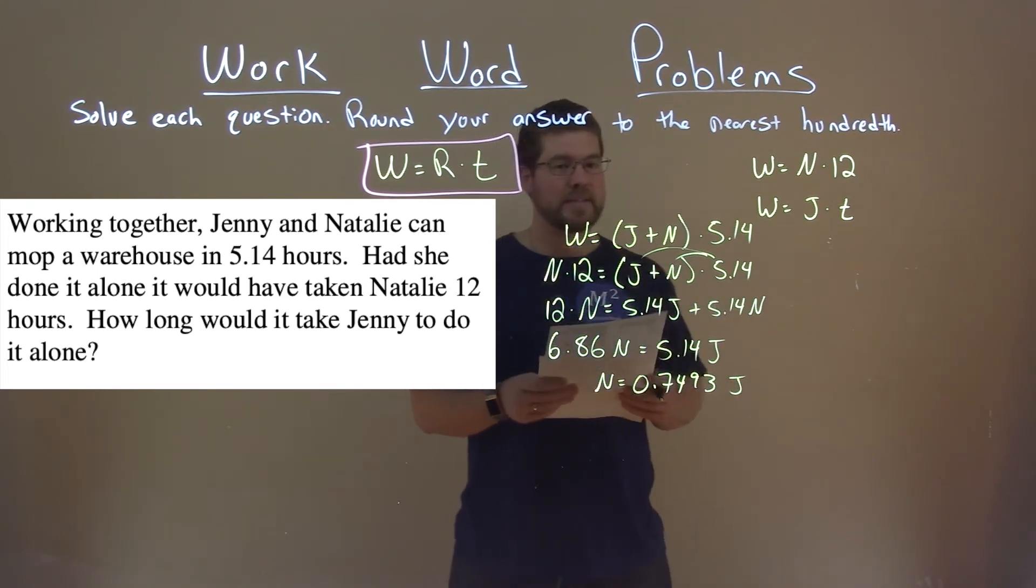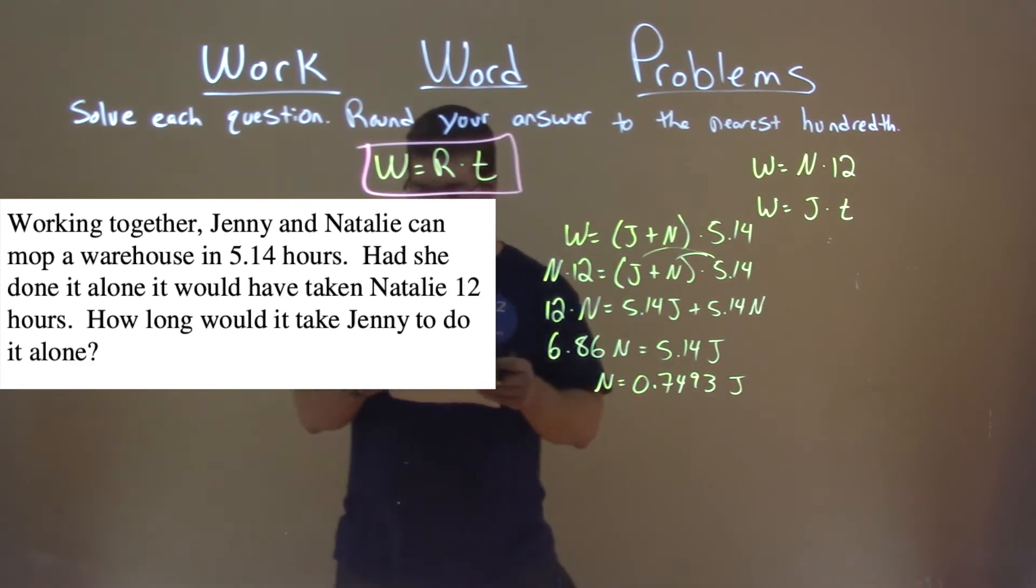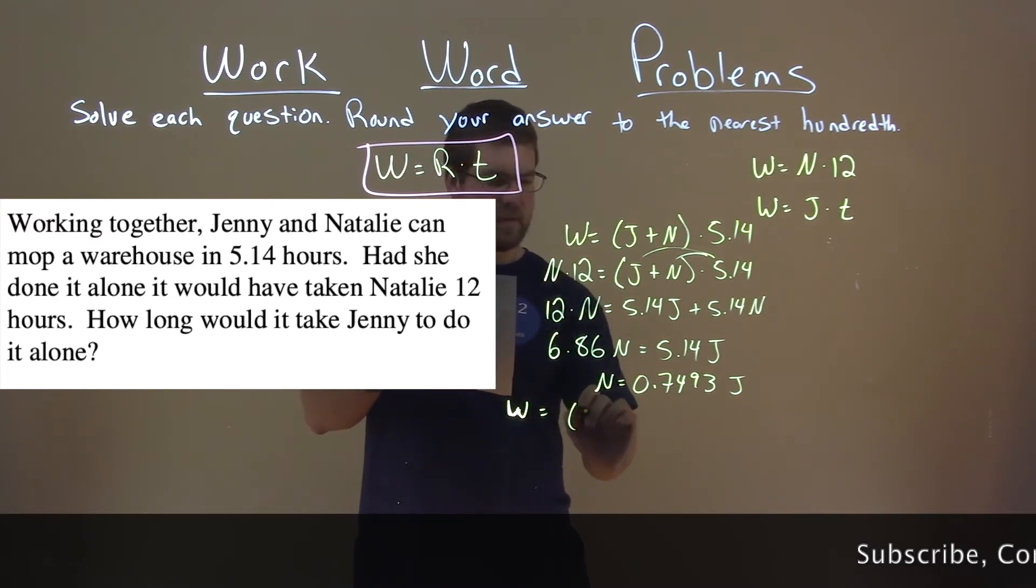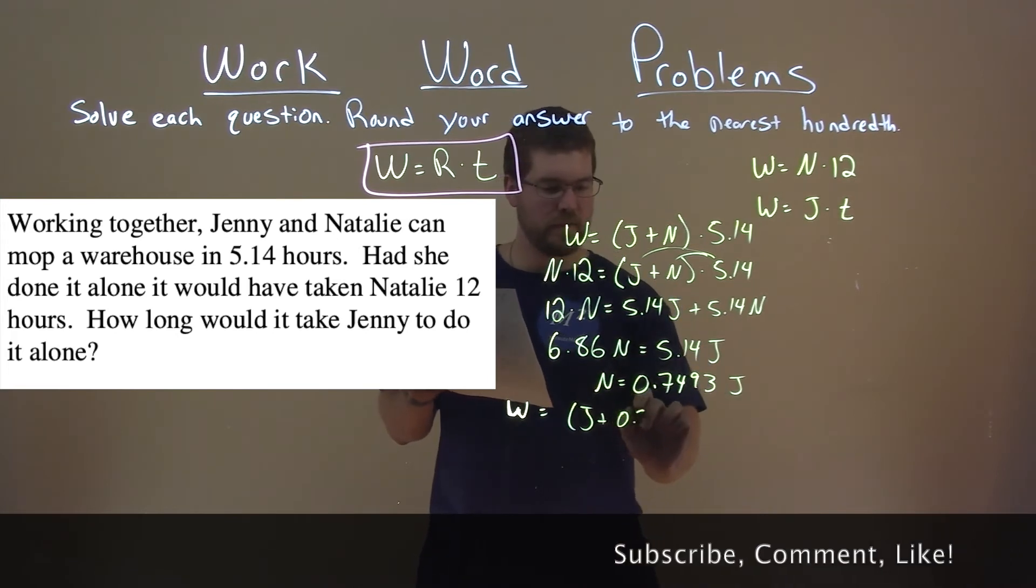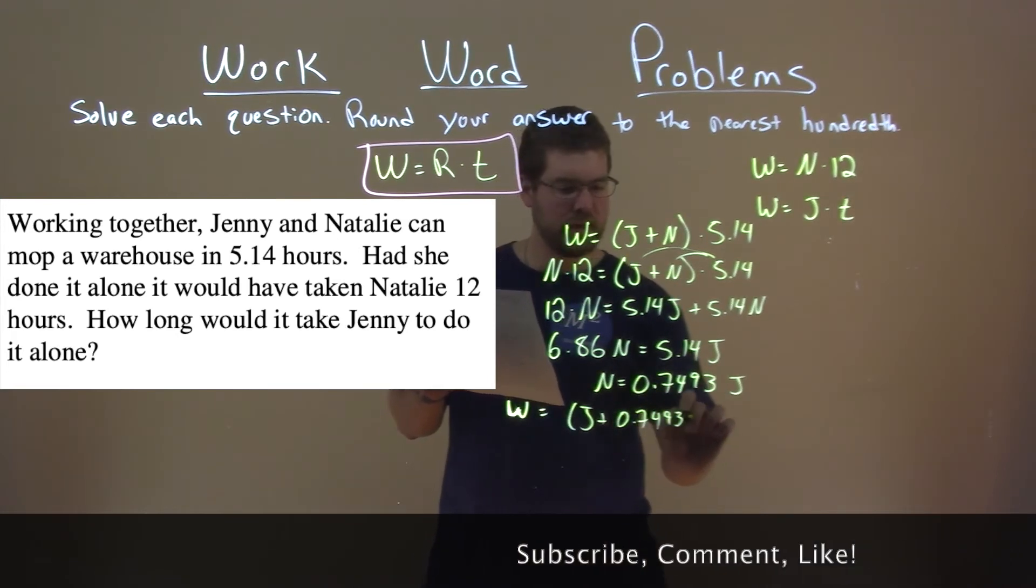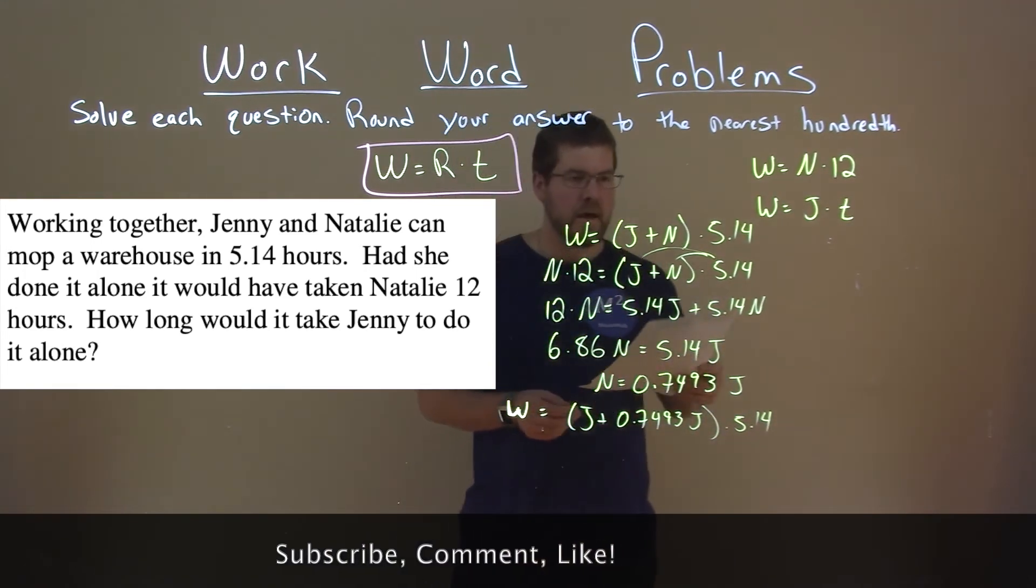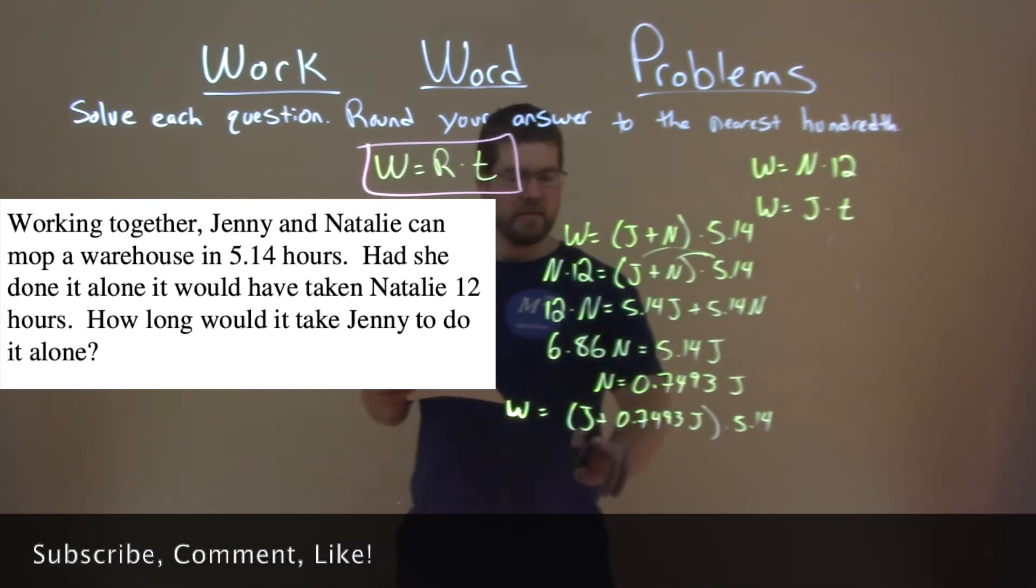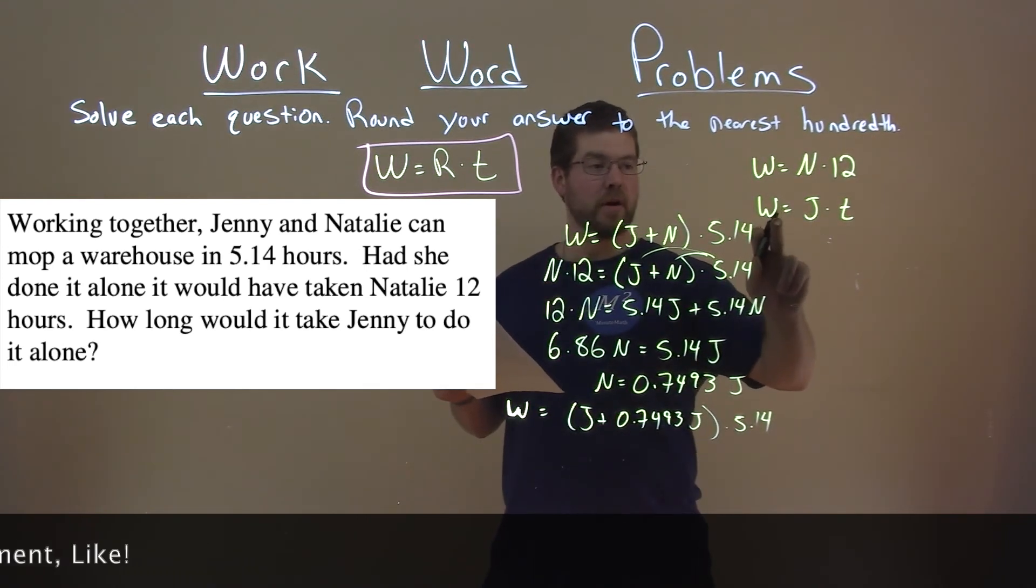A lot of work there, but we have N by itself. So now, let's go back into our equation, and let's see if we can plug that in for N. So we have our work here, W is equal to J plus, this is N, 0.7493J times 5.14. And we know, in terms of J's and T, Jenny's work, our work is J times T.